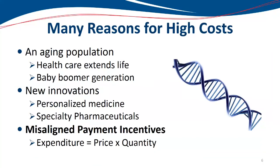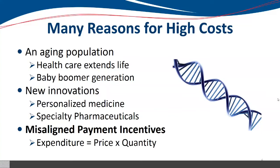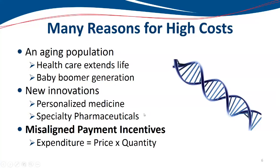The first that we have to consider is that we have an aging population. Part of this increase in spending is because we have a growing elderly population. When you have new medicines and new advances in healthcare, it leads to longer life expectancy, and that means people will be spending more money on healthcare because they're around longer. Baby boomers currently represent one out of five Americans, so we have people living longer and more of them that we're caring for.